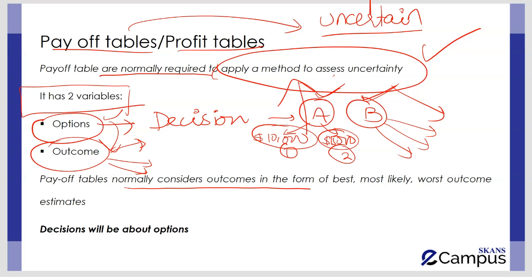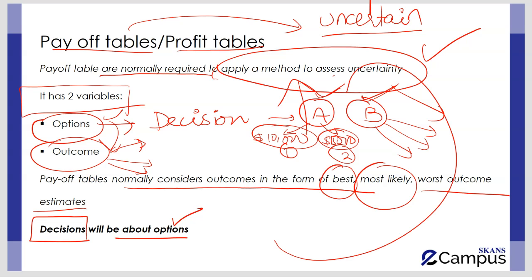A payoff table normally considers outcomes in the form of best, most likely, or worst outcome estimates, though this is not always the case. One important thing to keep in mind: the decision is about the options, not the outcomes. Outcomes are the different possibilities of returns for one particular decision. The payoff table has two variables — the options or decisions, and the outcomes — and the number of outcomes per option can vary.